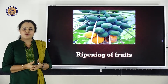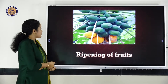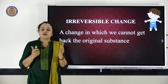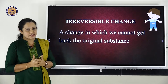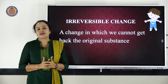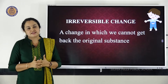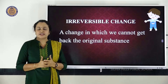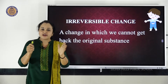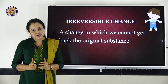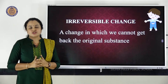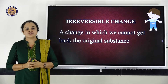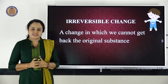See, ripening of the fruits — another example. In all these examples, it is entirely different from the first few examples like melting of the butter or the stretching of the rubber band. In this change, you will never get back the original substance, even if you change the condition. Such changes in which you will never get back the original substance, we call it an irreversible change.